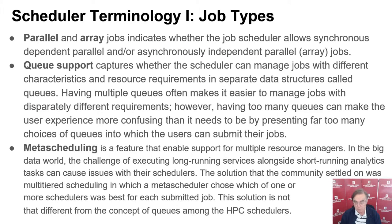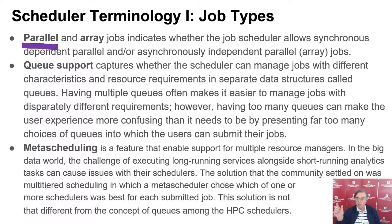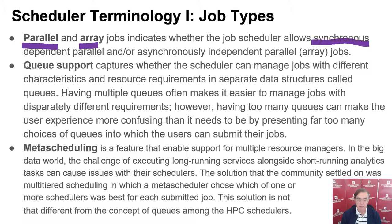Here we have some definitions of job types. The first are a little subtle because they're not actually agreed terminology. In the parallel job type, you have multiple independent tasks running in the same job, and those tasks are synchronized — that's what is called synchronous. This contrasts with array jobs, which are multiple jobs that are not synchronized in a strict fashion — so-called high throughput computing.